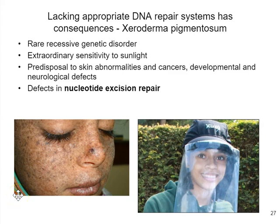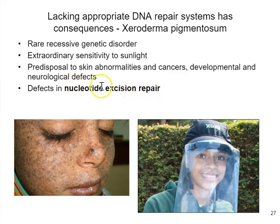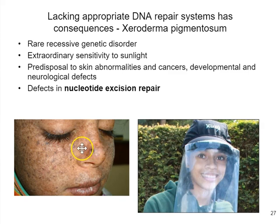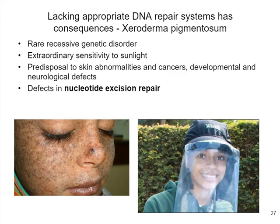A final point about DNA repair: if you don't have appropriate repair systems, there will be consequences. There is a genetic disorder called xeroderma pigmentosum. Individuals with this condition have defects in their nucleotide excision repair pathway, so they cannot correct thymine dimers using that system, making them extremely susceptible to UV damage. They must cover every part of their body when going outside. Lesions visible on the skin are due to this damage — the best protection available is covering at all times. That concludes this short lecture on DNA repair.